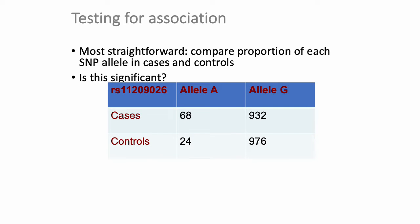What you would do is build one of these 2x2 contingency tables where every case and every control that you've genotyped has either an A or a G at that SNP position. Among your cases, you divide individuals into those who have A or G, and likewise for controls, building this 2x2 table where rows each sum to 1,000. You can see that A is the minor allele — it occurs at a lower frequency in your population than G.